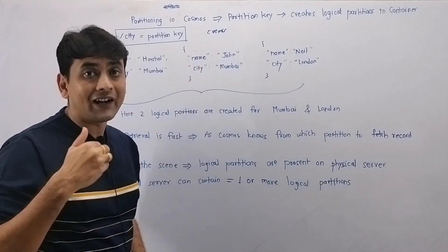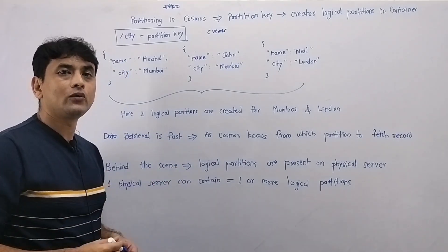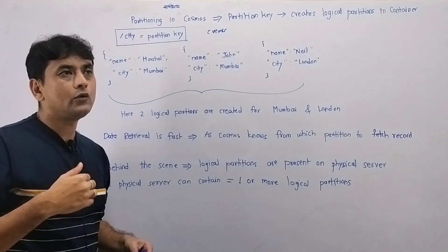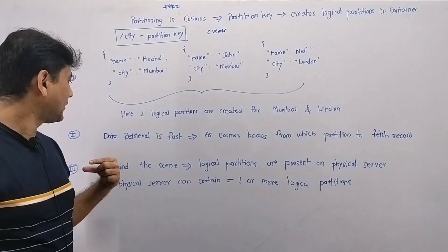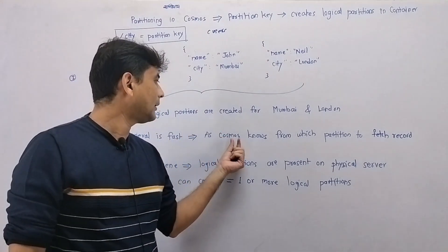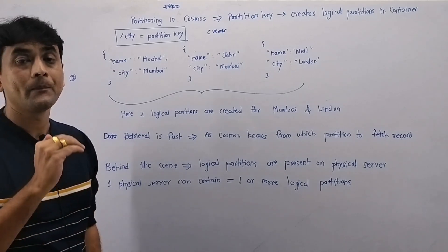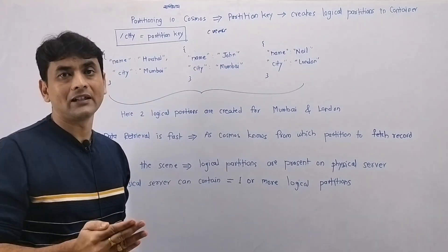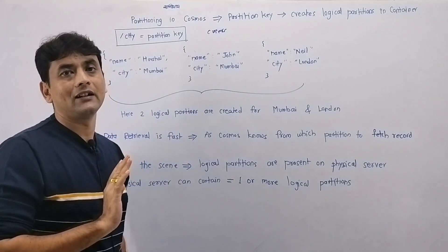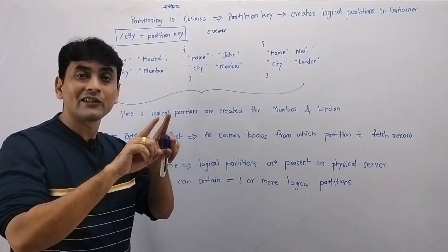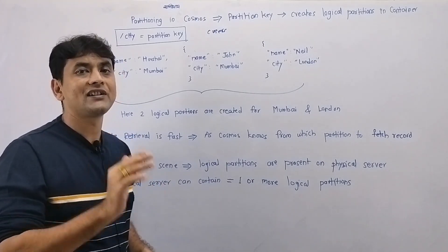So based on partition key value, multiple logical partitions are created in a container. If we have 100 different values of city, that means 100 different logical partitions will be created. The reason we have this partitioning concept is that data retrieval becomes fast — Cosmos Database knows from which partition to fetch the record. When fetching records, we provide the partition key value, so Cosmos Database goes directly to that logical partition and retrieves the data, without querying the whole container.